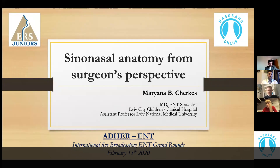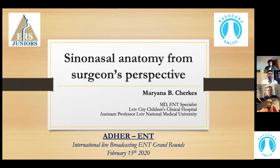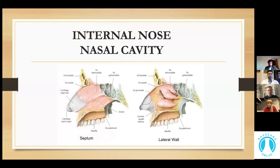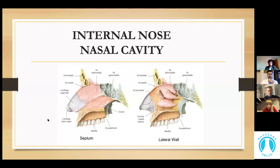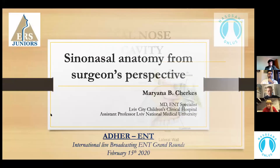Especially for juniors and young specialists, from basics and from a surgeon's perspective. The internal nose is constituted by two nasal cavities extending from the nares to the choana, and separated by the nasal septum into two parts: left and right. Each nasal cavity connects with the paranasal sinuses, nasopharynx, and through the foramen sphenopalatinum with the pterygopalatine fossa.